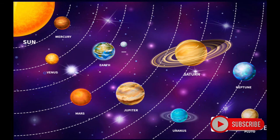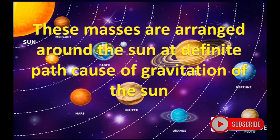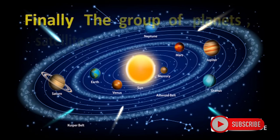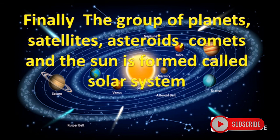These masses are arranged around the sun at different paths because of the gravitation of the sun. Finally, the group of planets, satellites, asteroids, comets, and the sun is formed, called the solar system.